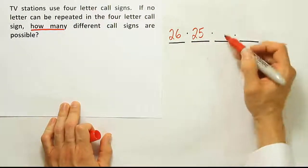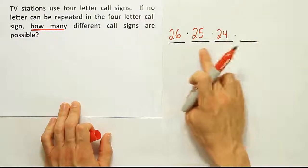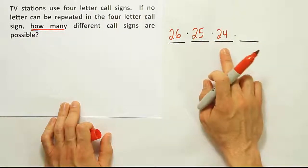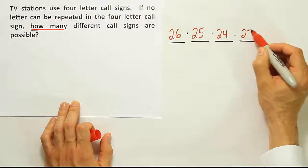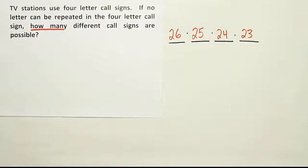And then the next letter after that, you will only have 24 choices because you would have used two choices here, leaving only 24 remaining letters in the alphabet. And then finally, for the last letter, you will only have 23 choices. And then at that moment, you stop.